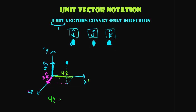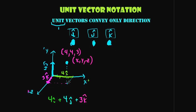So the full position of this particle is 4 i-hat plus 4 j-hat plus 3 k-hat. If asked where this floating particle is relative to the origin, we say: four in x, four in y, three in z. In point notation this would be written (4, 4, 3) — x followed by y followed by z. It's a very useful way of describing vectors, as we'll see shortly.